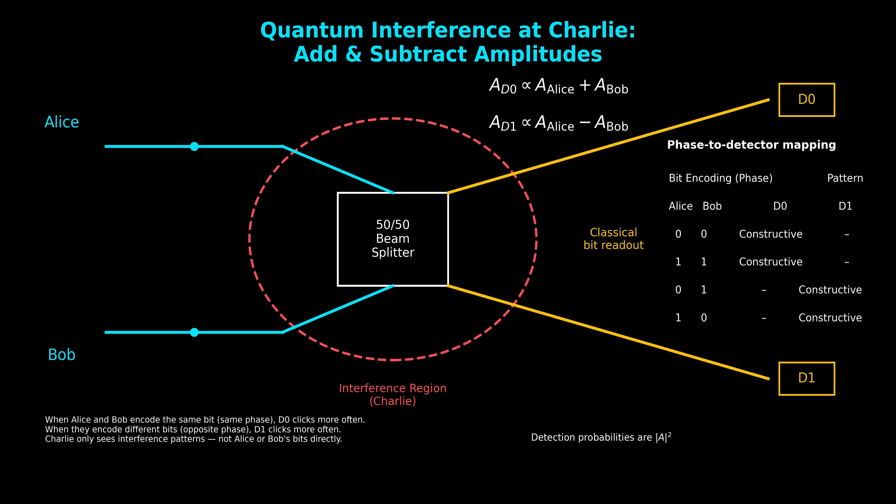Let's take a walk through the table. Row 1: Alice 0, Bob 0. When both photons are encoded with the same phase, the amplitudes add constructively at D0 — D0 tends to click while D1 tends to be silent. Row 2: Alice 1, Bob 1. Again, identical phases. Even though both photons pick up a minus sign, the signs match, so interference is still constructive at D0.